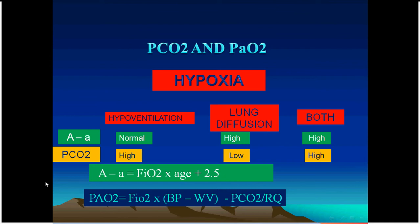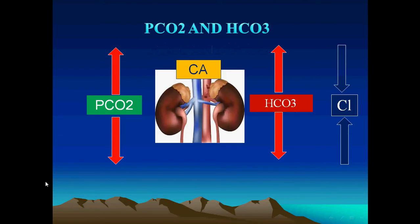PaCO₂ must be correlated with bicarbonate and chloride. Elevated PaCO₂ stimulates carbonic anhydrase, producing more bicarbonate, which is retained in exchange for chloride — maintaining electroneutrality. So in chronic hypercapnia, bicarbonate is retained and chloride is lost. In a COPD patient with CO₂ of 60, bicarbonate rises to 31 mEq/L and chloride falls proportionally.